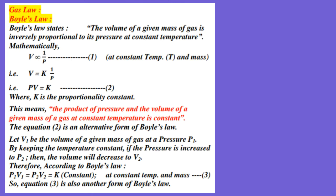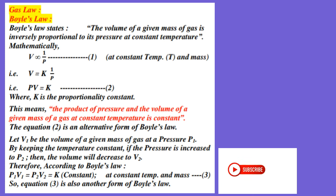Equation number 2 involves a given mass of gas at constant temperature. So if we multiply through, the constant temperature gives PV equal to K. We see the same equation number 2: PV is equal to K, where the volume and pressure are multiplied for a given mass of gas at constant temperature.